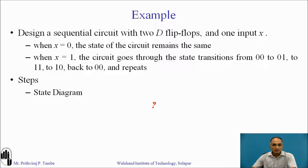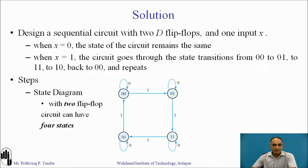The first step is to derive the state diagram. In the problem statement itself, the number of flip-flops and information regarding the states is already given, so we can use this information for drawing the state diagram. Here we have the initial state 00. When x is 0 the next state is the same as the present state, that is 00. When x is 1 the state changes from 00 to 01, then from 01 to 11, and from 11 to 10.